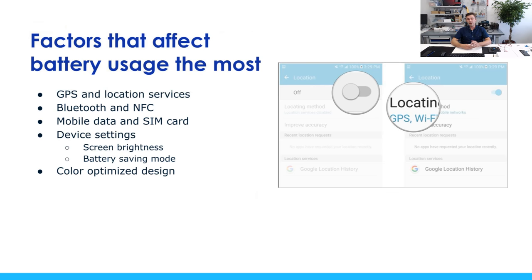Among the key factors which affect battery usage on a mobile device are the modules and components on the device and how they affect the battery. The most battery-consuming components include GPS and location services, Bluetooth and NFC services, and mobile data with a SIM card — especially on 3G, 4G networks, or with no network at all. These all affect battery life.